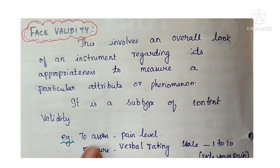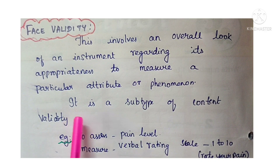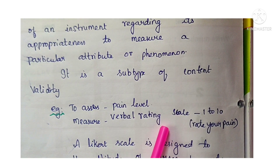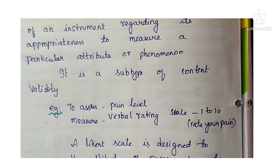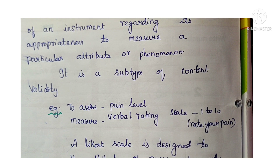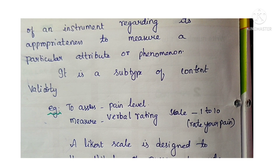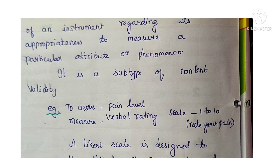Face validity involves an overall look of an instrument regarding its appropriateness to measure a particular attribute or phenomenon. It is a subtype of content validity. For example, to assess pain level, if you are going to use a verbal rating scale rating pain from 1 to 10 — by seeing the instrument itself, you can tell the correct instrument has been taken to measure the thing.